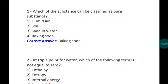Question one: Which of the substance can be classified as a pure substance? The correct answer will be baking soda. Baking soda is the pure substance among the below options. Humid air is not a pure substance, soil and sand in water is also not a pure substance.